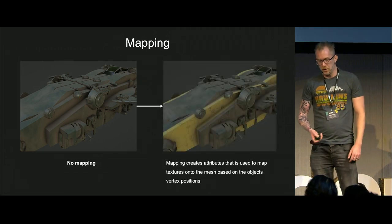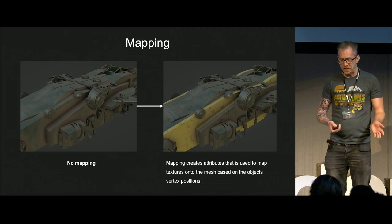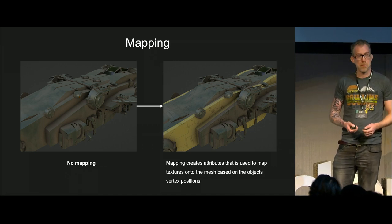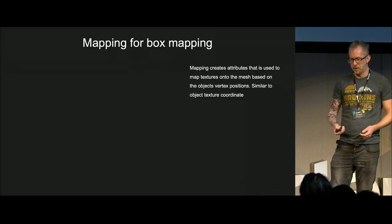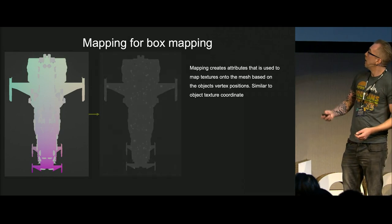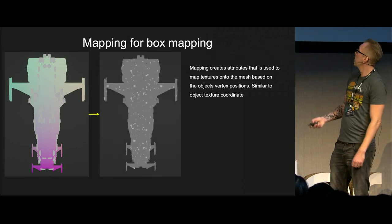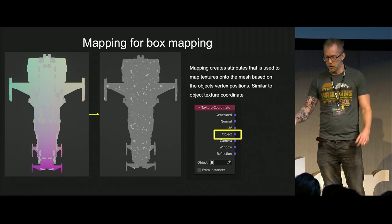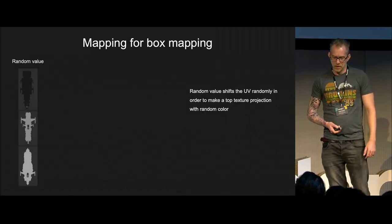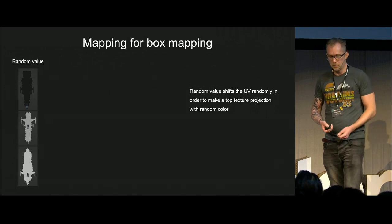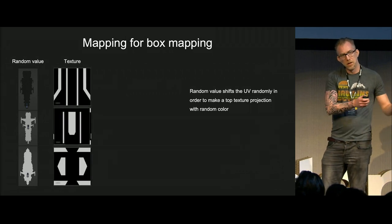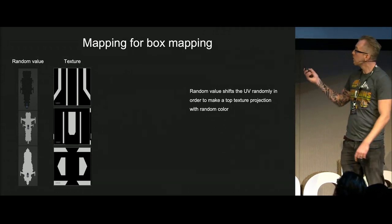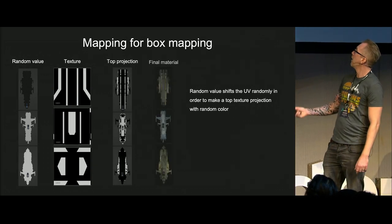Then mapping. The geometry nodes don't really have a UV, so when the vehicle is created, I make this attribute called 'mapping' that lets me texture stuff and tile textures. Here we can see the mapping visualized. Then I have a tiling sci-fi texture, and this is very similar to the texture coordinate objects in the normal shading nodes. I assign a random value to the ship, and this is used to move the mapping in X texture space, so I can do a texture projection with this UDIM sequence, do a top projection, and that's the final material.